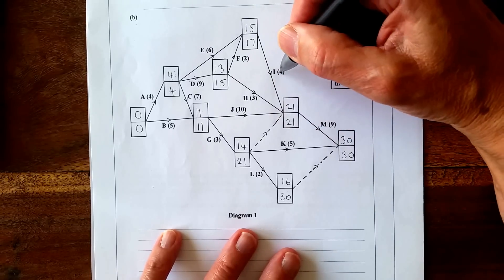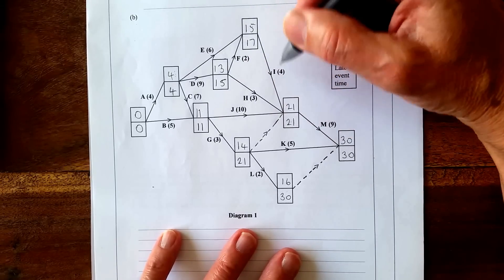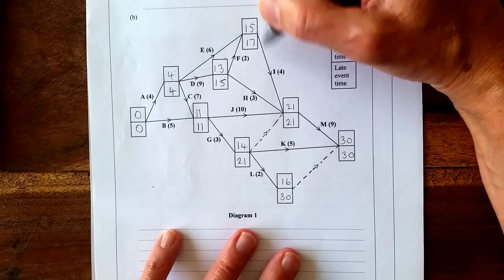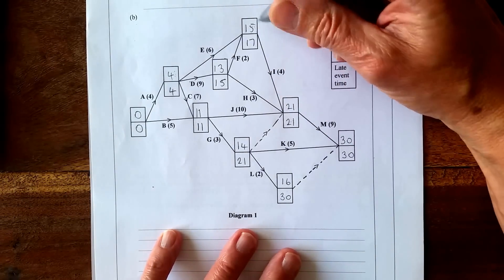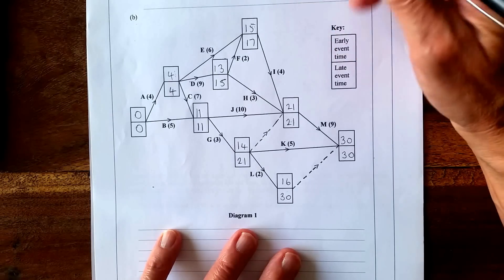So it's late event time, activity time, and early start. So subtract 4, subtract 15, so that's 19 altogether. So the float would be 2, because 21 subtract 19 would give 2. So that's what the total float is.